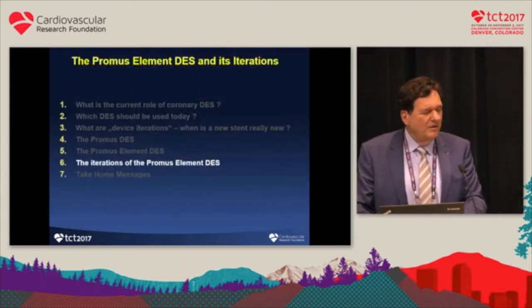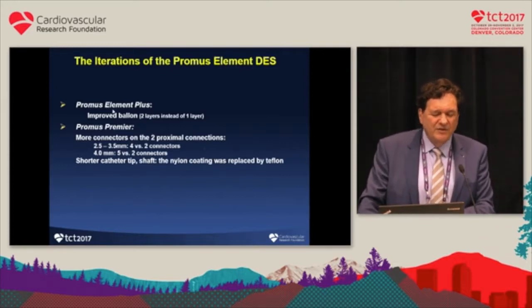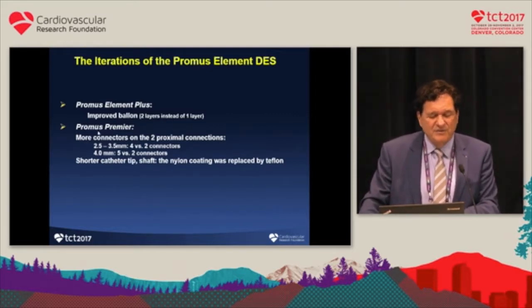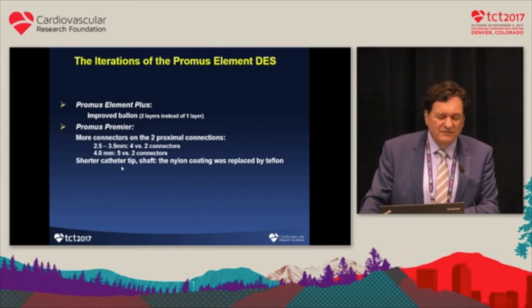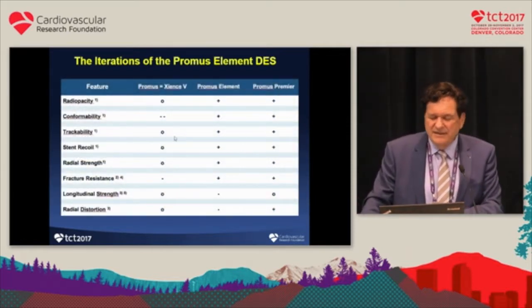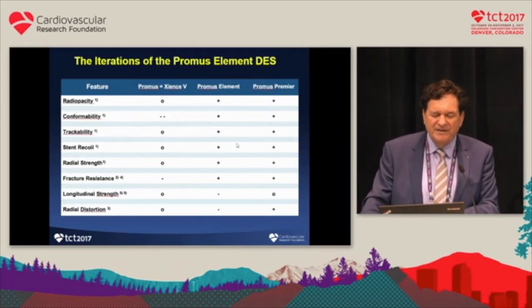The only discussion was about longitudinal stent distortion, but it did not have any effect on clinical variables. Nevertheless, there were some iterations because of this longitudinal stent distortion. The next step was the PROMOS element plus with an improved balloon — two layers instead of one. Then came the PROMOS Premier with more connectors to make it more stable and changes in the catheter tip and shaft. There are some small differences between these three stents.